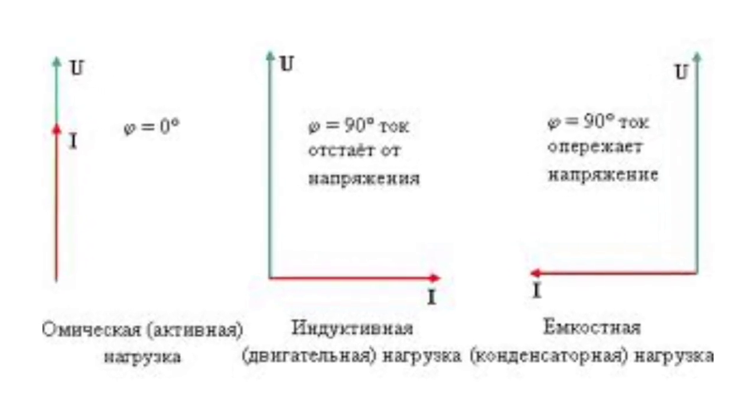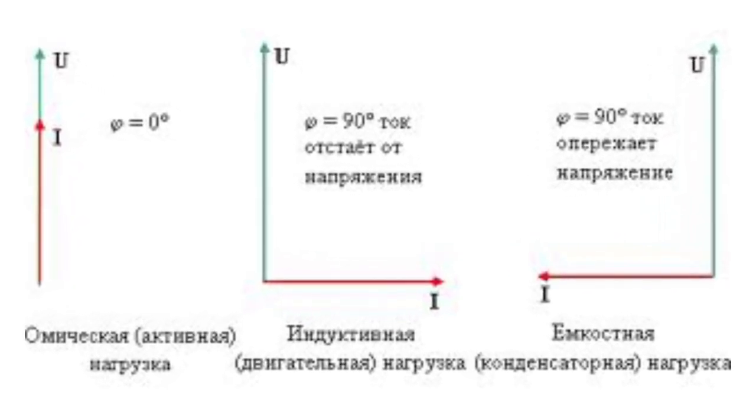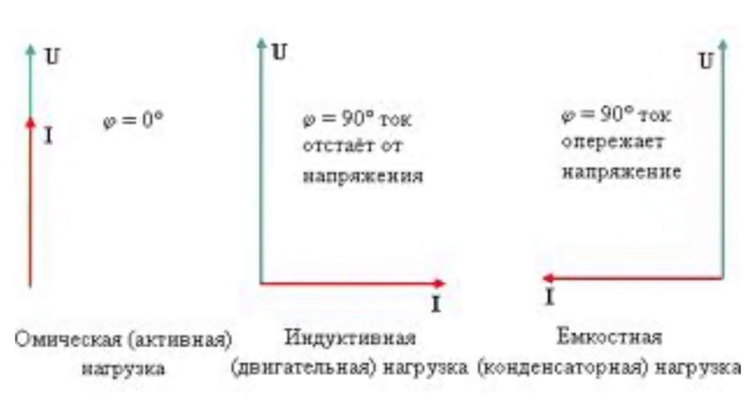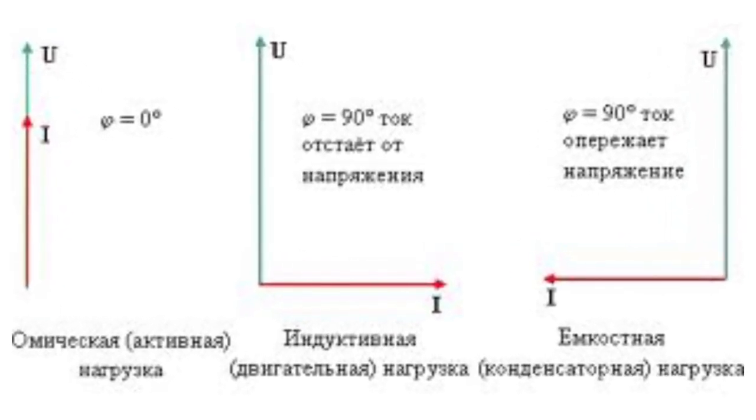When the load is of inductive nature — motors, idle transformers — the current is behind voltage. Capacitive nature of load, such as capacitors, means the current is ahead of voltage.